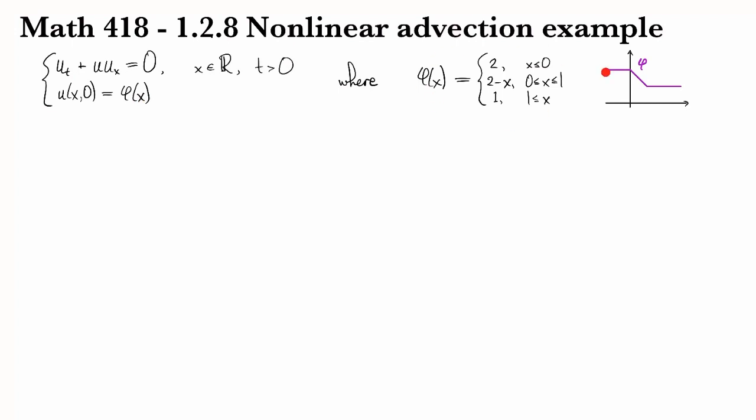So this is piecewise defined where it's equal to two for x negative, and then two minus x down to one at x equals one, and then it's one constantly thereafter.